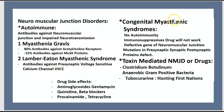Congenital myasthenic syndrome is not autoimmune, so immunosuppressive drugs will not work. It is caused by a defective gene of the neuromuscular junction. Mutations could be presynaptic, synaptic, or postsynaptic.